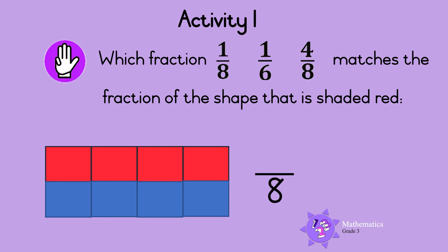How many parts are red? Let's count: 1, 2, 3, 4. So 4 of the 8 parts are red. We write the number 4 at the top of the fraction like this. So the fraction is 4 eighths. Say it with me, ready? 4 eighths. So this is the fraction that matches the fraction of the shape that is shaded red.